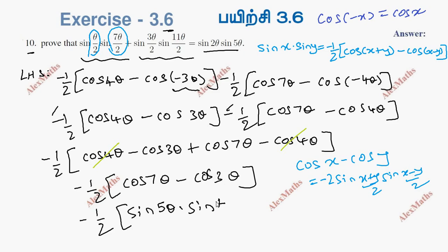In the formula, the minus 2 and the negative sign cancel out, leaving us with sine 5 theta into sine 2 theta, which proves the right-hand side.